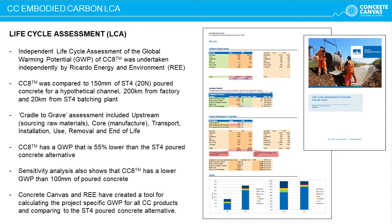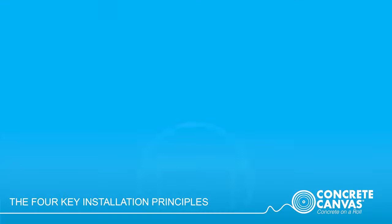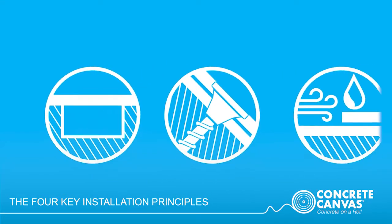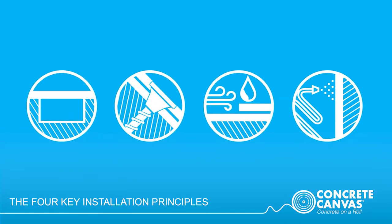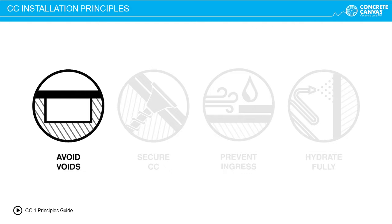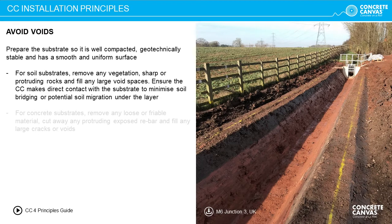Concrete Canvas and Ricardo Energy have developed a tool to calculate project-specific carbon savings, comparing CC versus the poured concrete alternative. Contact your local regional technical sales representative for further information. We are now going to look at the four key principles which should always be followed to ensure a successful concrete canvas installation. The first principle is to avoid voids, which mostly relates to preparing the substrate. There is less preparation required for CC compared to precast concrete sections, but it is important to avoid significant voids.